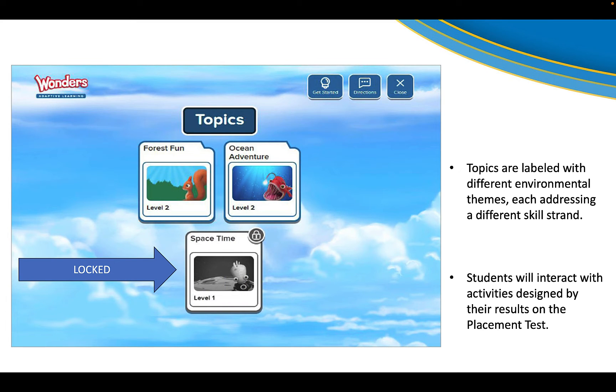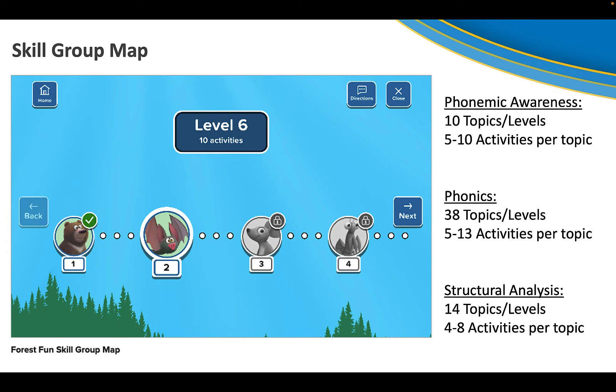But as I mentioned, based on how they place, some items or some of the topics might be locked. Students will need to complete the prerequisites in order to unlock the new topic. Here is also a map of the skill group. You can also see here on the right hand side of the screen the variety of topics or levels and how many activities per topic, which can range between four and thirteen activities.